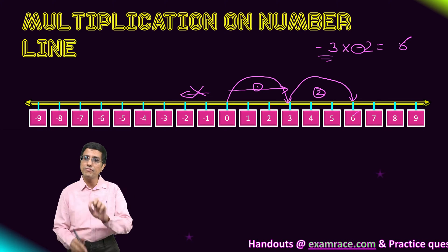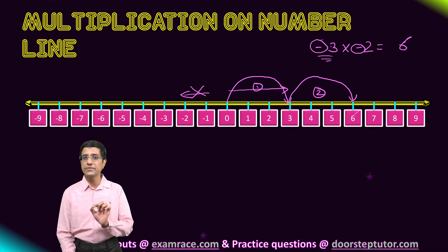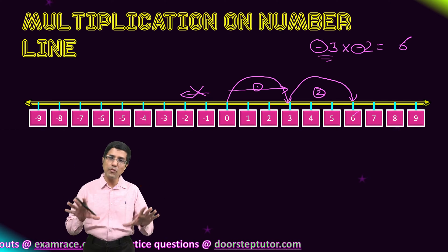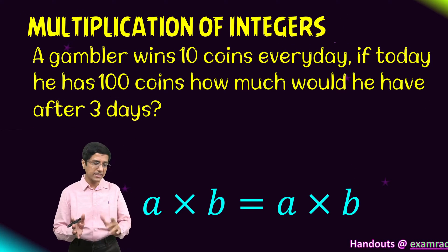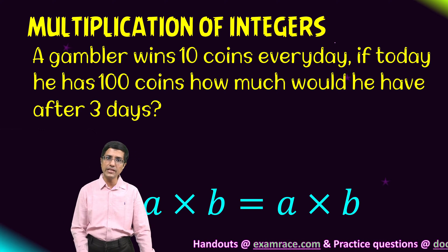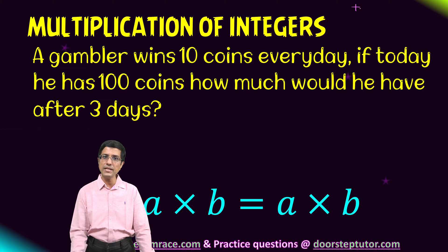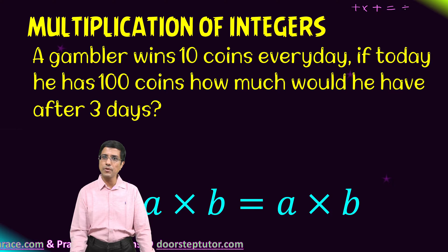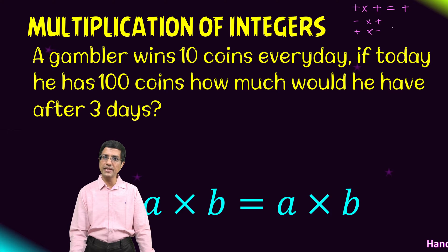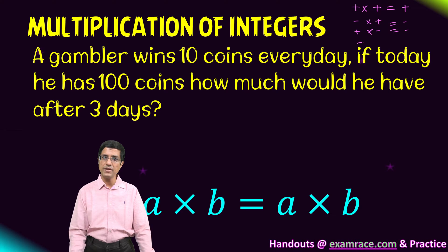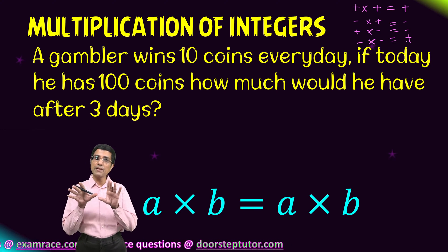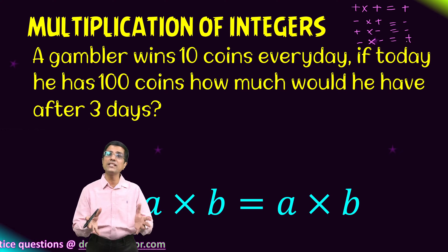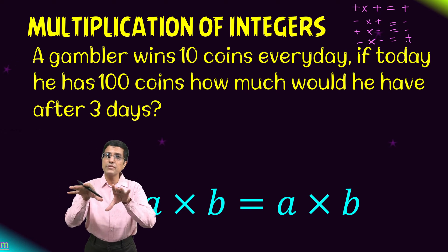So this is one way to understand the multiplication of integers — what happens to the sign of the final answer when we have different signs in the operands. The rule can be reinforced further with a real world example. The rules are very simple: if I multiply two positive numbers, my answer becomes positive. If I multiply negative with positive or positive with negative, my answer is negative in both cases. And if I multiply negative with negative, my answer becomes positive.